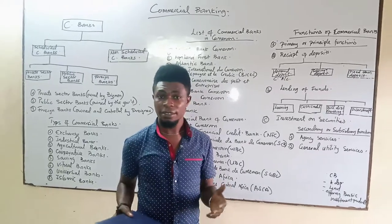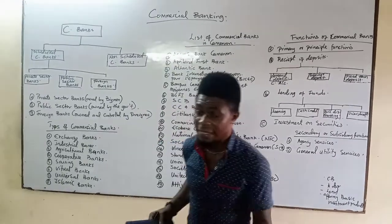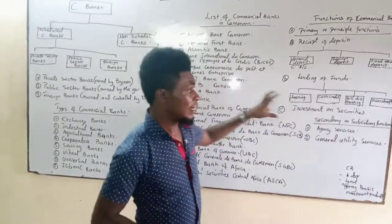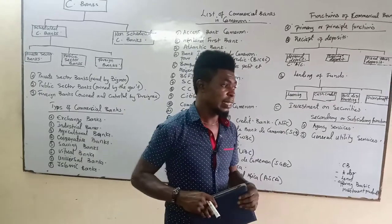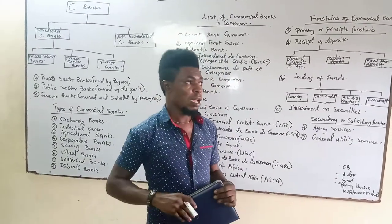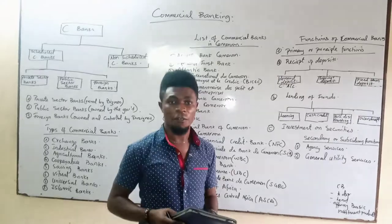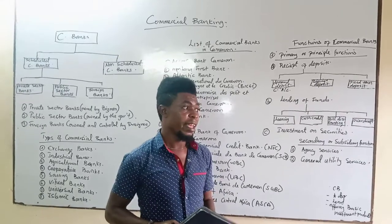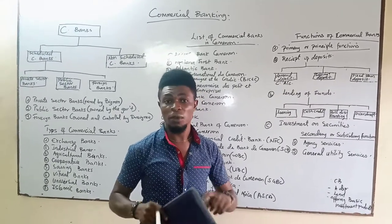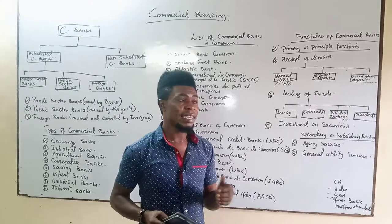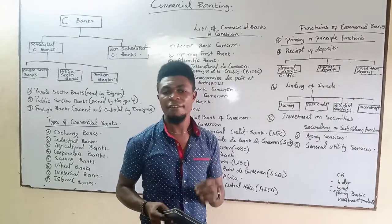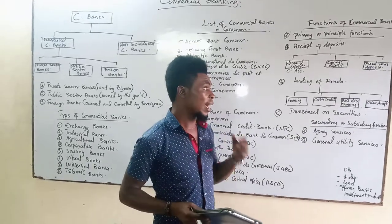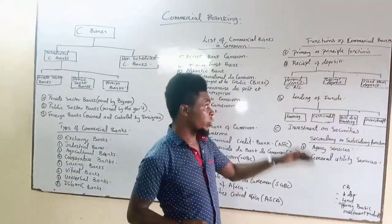We are going to continue today from where we ended in our last lesson. In our last lesson, we were looking at the banking system and discussed many things on it. We said that the banking system is that system that actually operates within the framework of an economy. It helps in boosting the economic activities of every nation, and a nation without banks is like a body system without blood. Banks are very necessary in every economy and have a lot of functions.